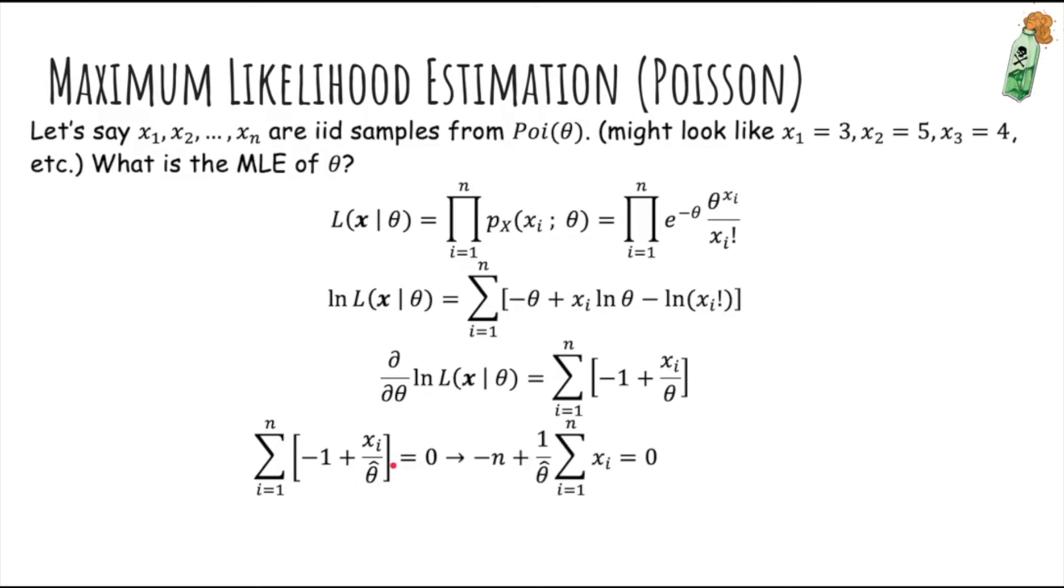Okay so do some algebra. We get minus 1 repeated n times; if you add it all together it's minus n. And then we can pull out the 1 over theta hat because it's a constant that appears in every term in the sum. And then solving for theta hat we get 1 over n times the sum of the xi's, the sample mean.